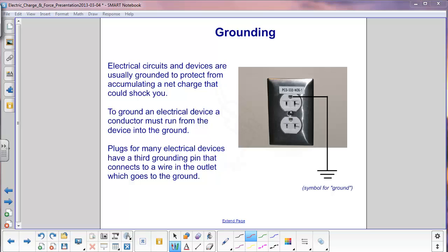To ground an electrical device, a conductor must be run from the device into the ground, giving a path to ground for the excess charge.